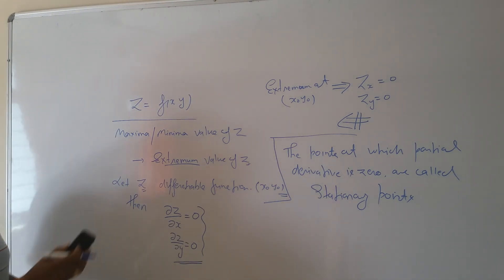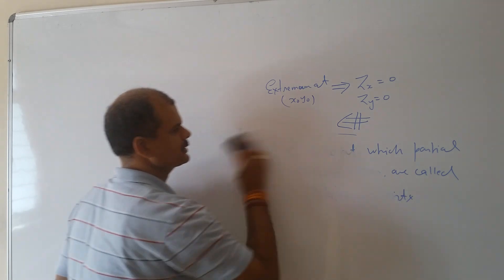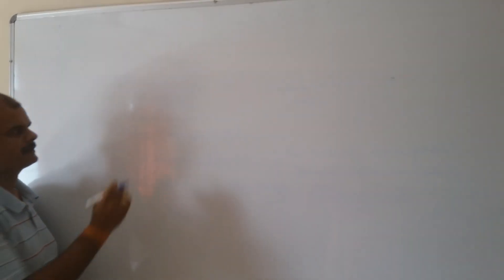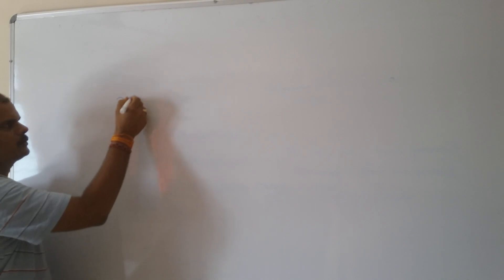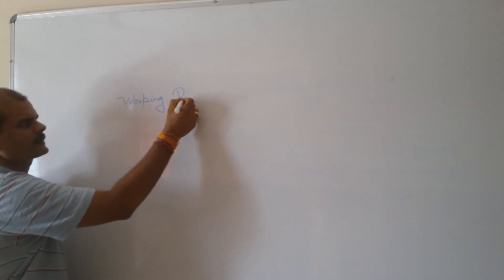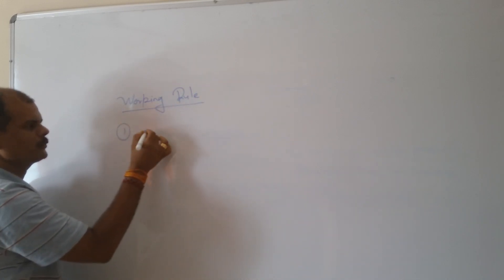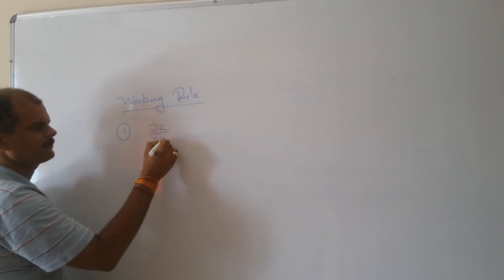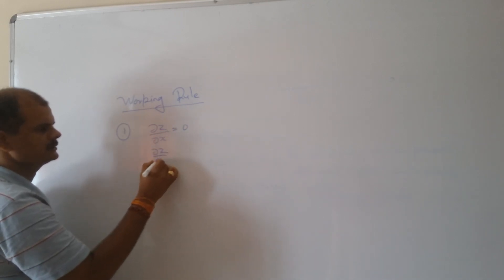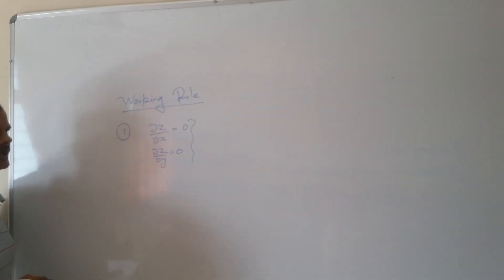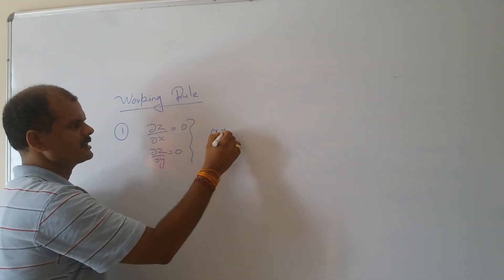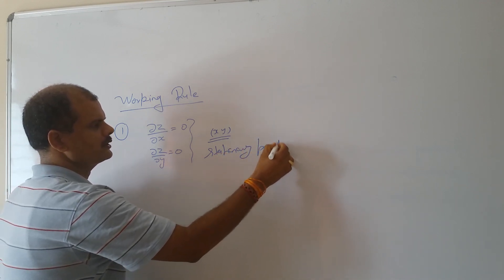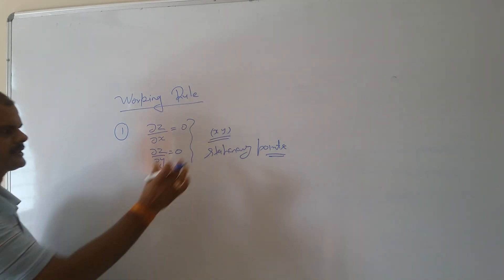Now, the working rule — let us see how to find the maxima and minima of a given function using the partial derivative concept. First step: we set del z by del x equal to 0 and del z by del y equal to 0, solve this set of equations, and get the points (x, y). These points are called the stationary points or extrema candidate points.